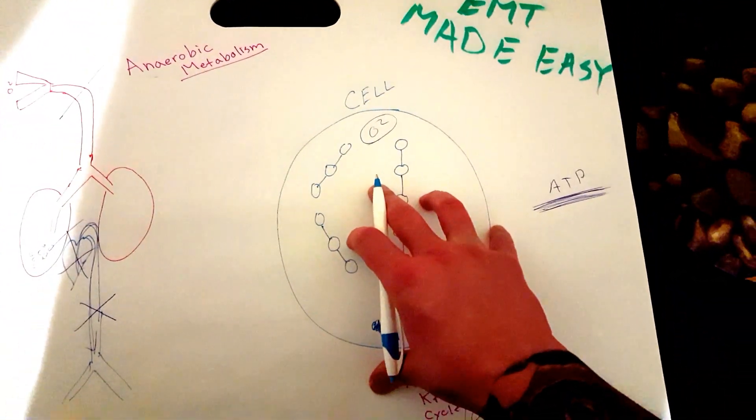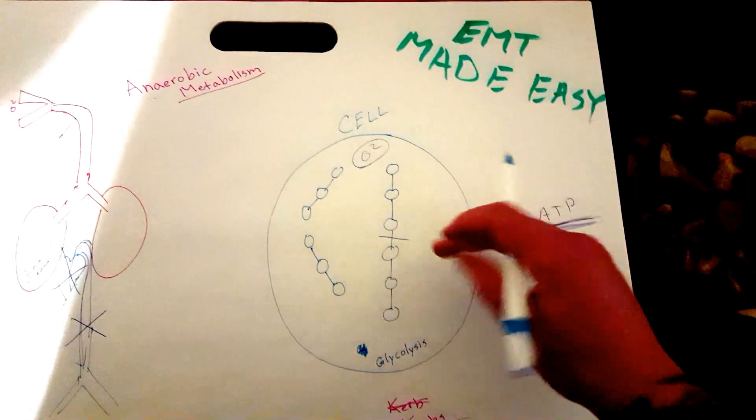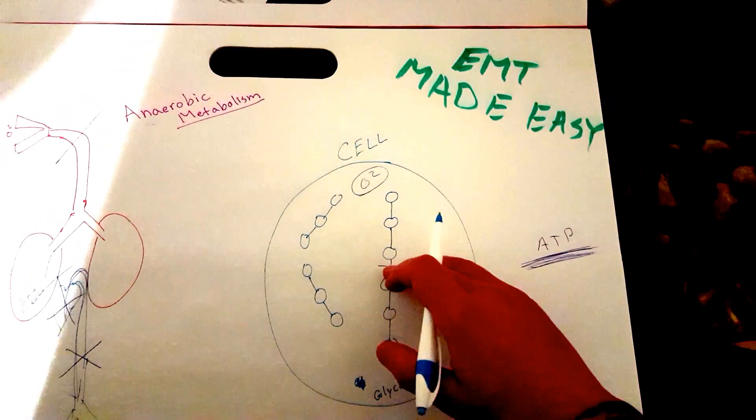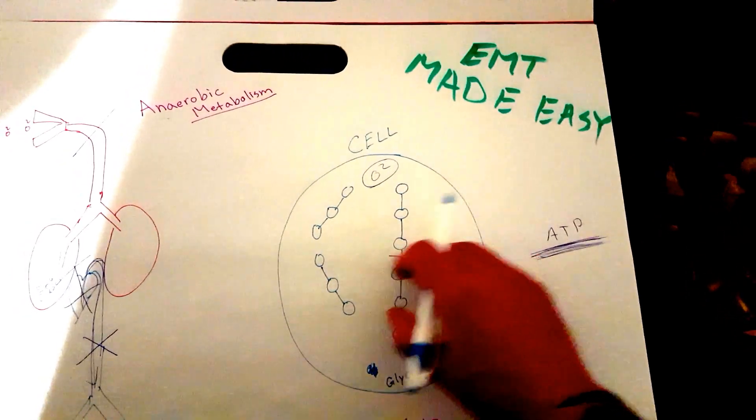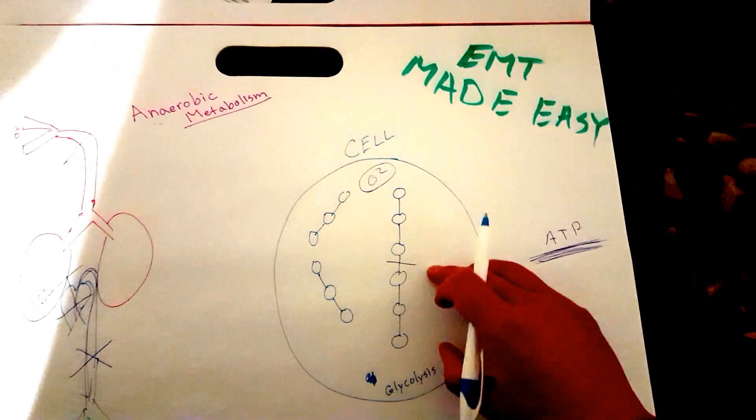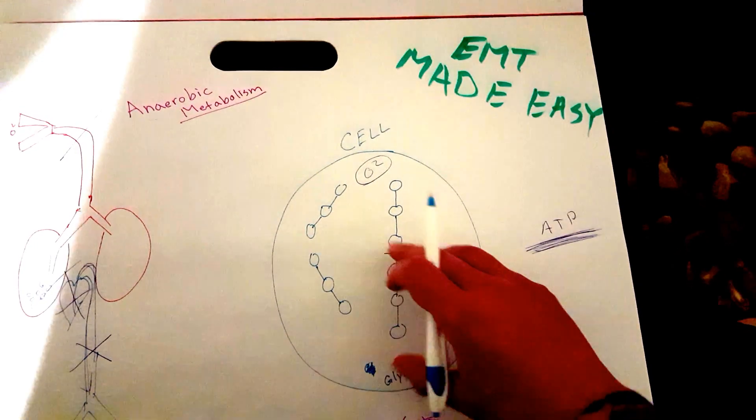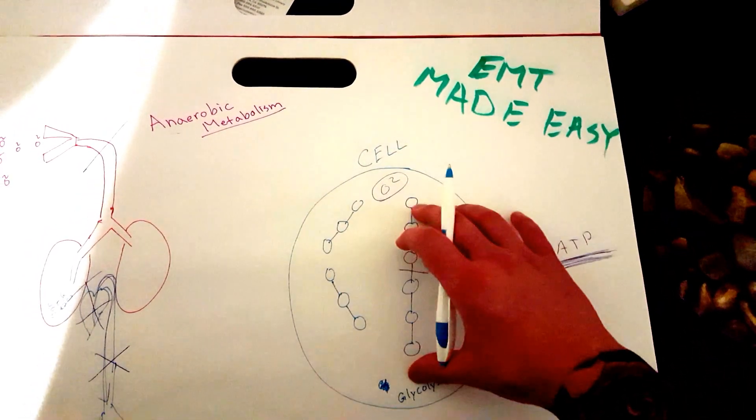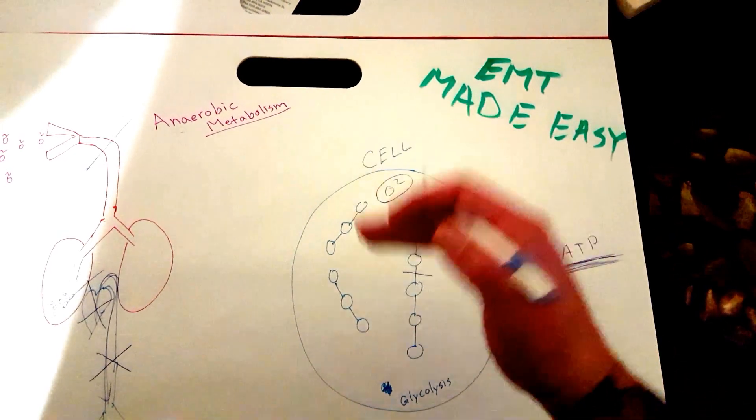Well, what happens then is that the glucose is still going to be in the cell, right? And it's still going to split. The splitting of the six carbon molecule is called glycolysis, and that just means that you're splitting a glucose molecule. That's all that word means.